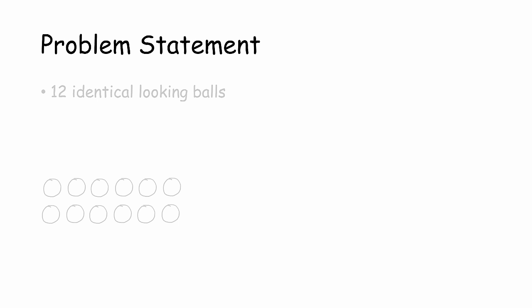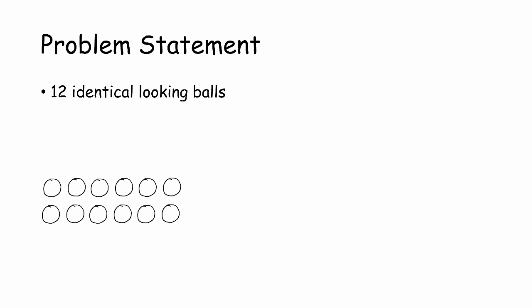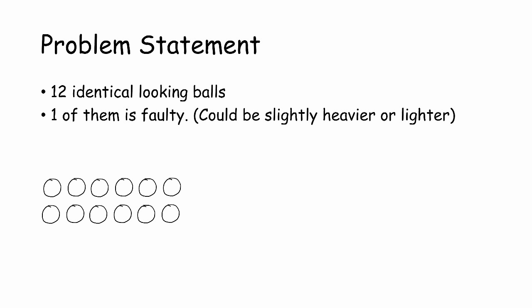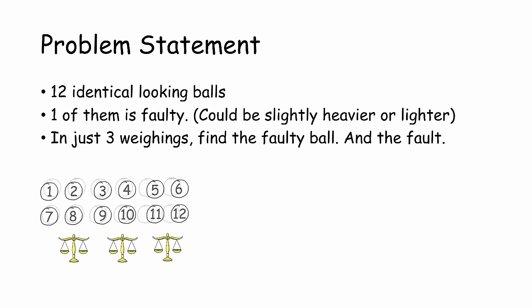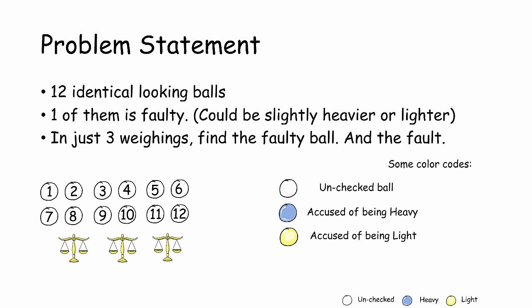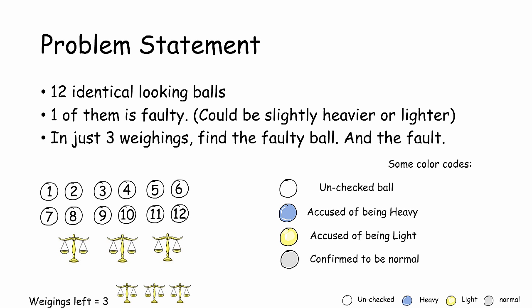Here's an attempt to solve the famous 12 balls problem. We have 12 identical balls and one of them is faulty. In just three weighings we need to identify the faulty ball and the fault. Here are some color codes we'll use throughout this video: white for untested, blue and yellow for heavy and light, and gray for ones confirmed to be normal. The bottom-left corner will keep track of the remaining number of weighings.